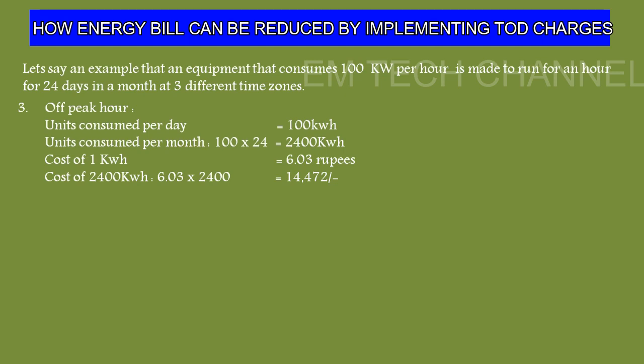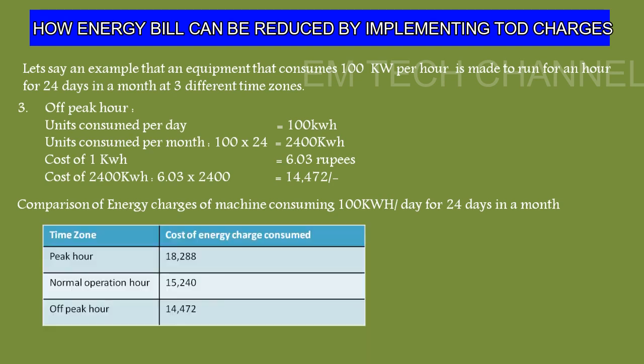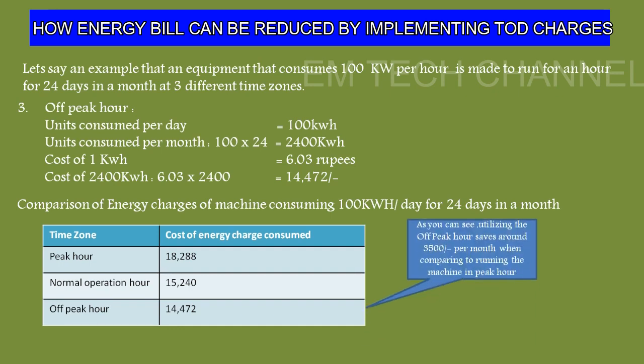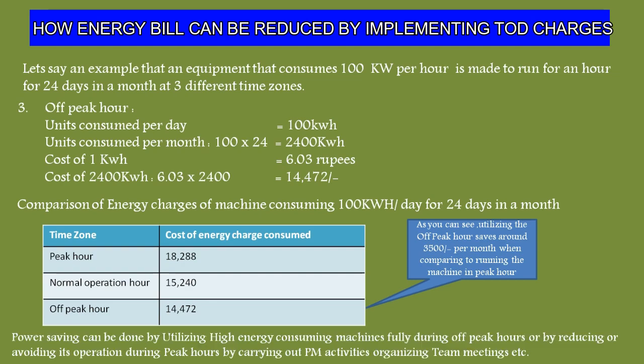Comparing the three categories: peak hour costs ₹18,288, normal operation costs ₹15,240, and off-peak hour costs ₹14,472. Running a machine in off-peak hours rather than peak hours saves around ₹3,500 per month without any investment. In practice, this may not always be possible due to customer demand and production volume, but the suggestion is to utilize high energy consumption machines as much as possible during off-peak hours and reduce their usage during peak hours by carrying out PM activities or organizing team meetings.